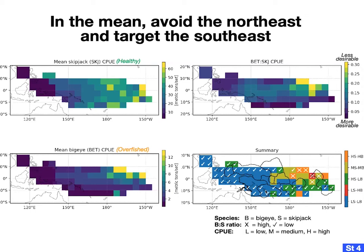Grid cells with check marks have low bigeye-to-skipjack catch ratios and should be targeted if skipjack catches are also high. Grid cells with X marks have high bigeye-to-skipjack catch ratios and should be avoided if at all possible. I also classified each grid cell into one of five types: red grid cells are least desirable with low skipjack catches and high bigeye catches, while green grid cells are most desirable with high skipjack catches and low bigeye catches. Basically, go for the green with check marks and avoid the red with X marks.